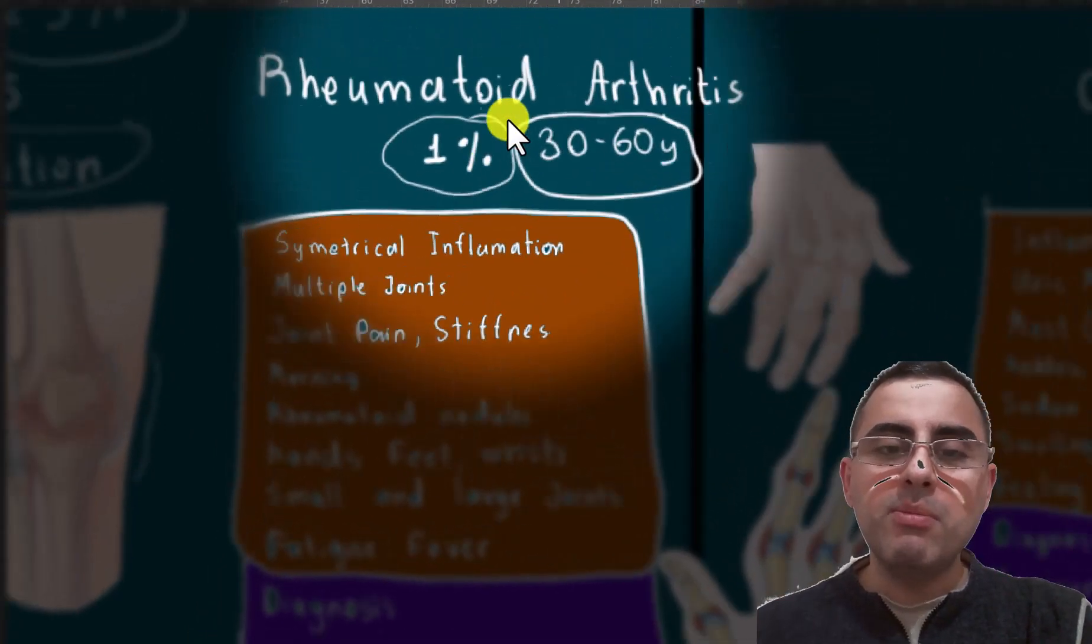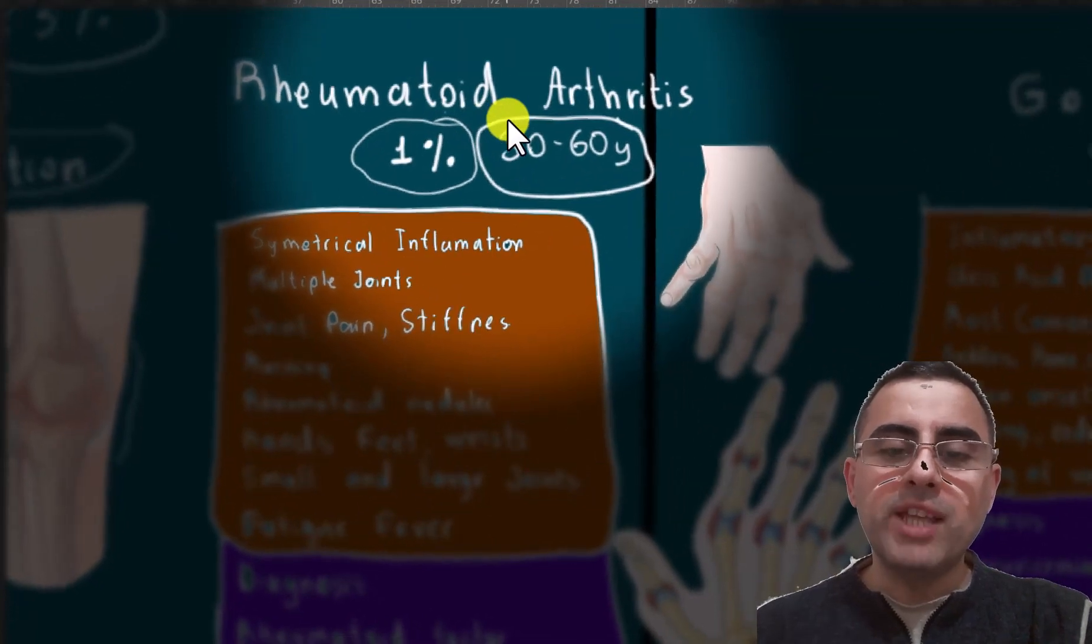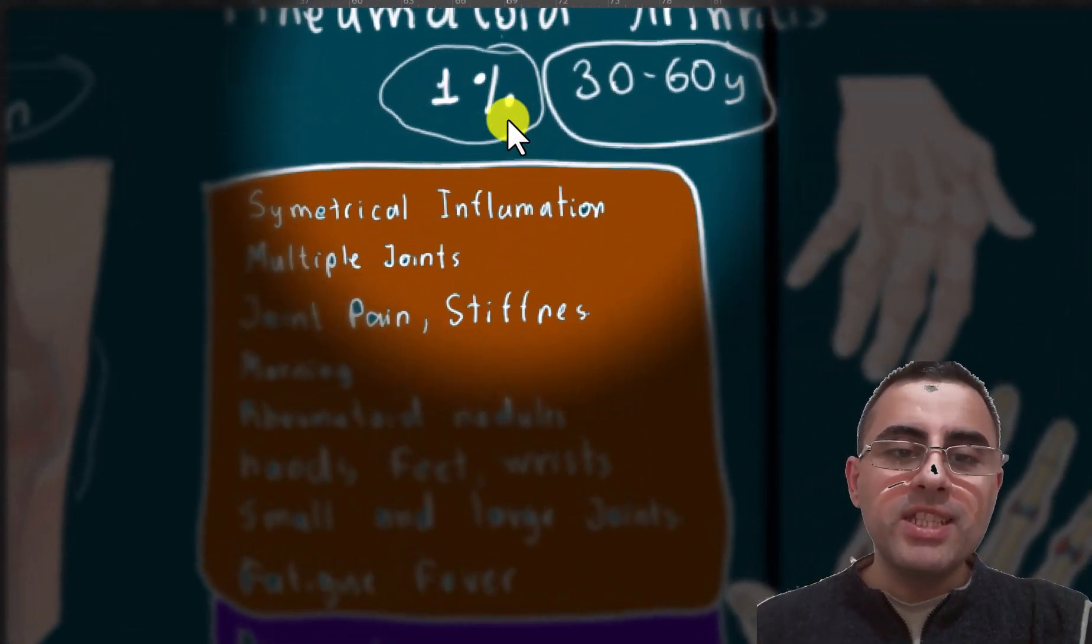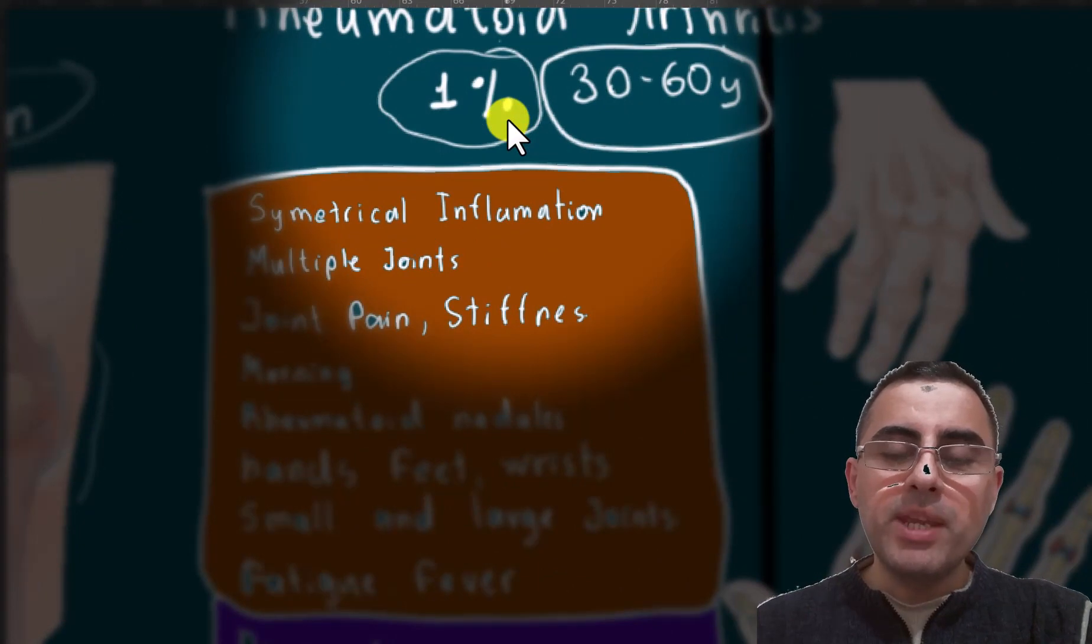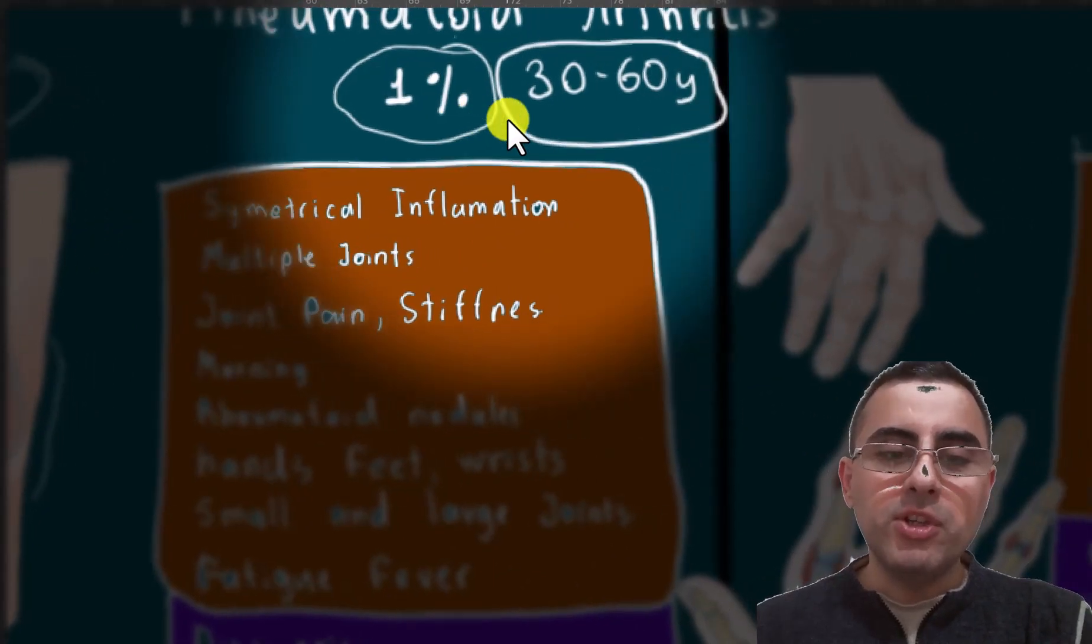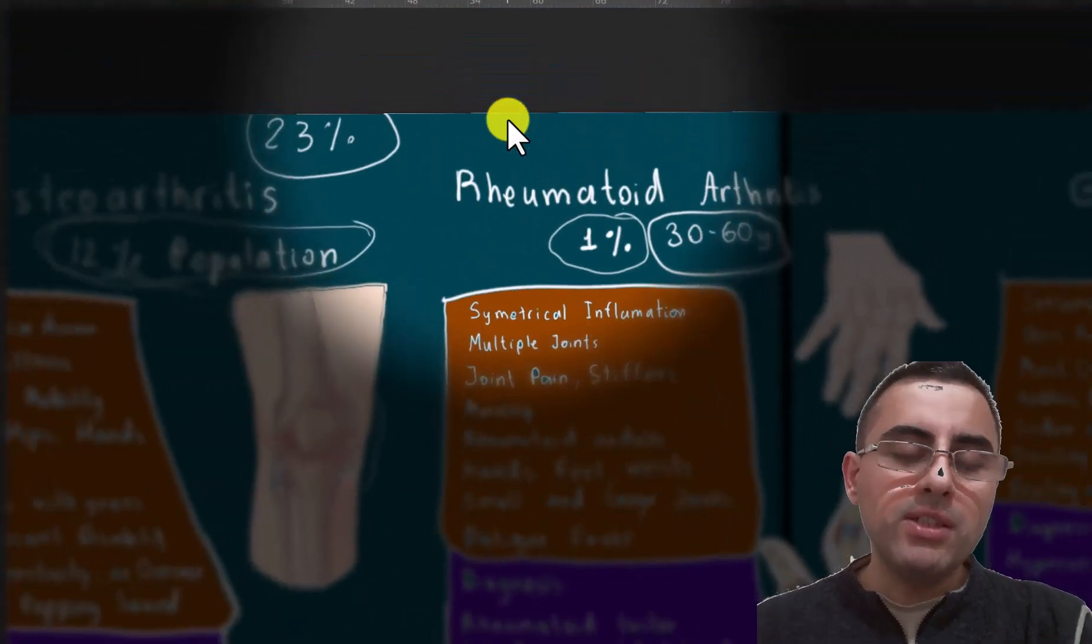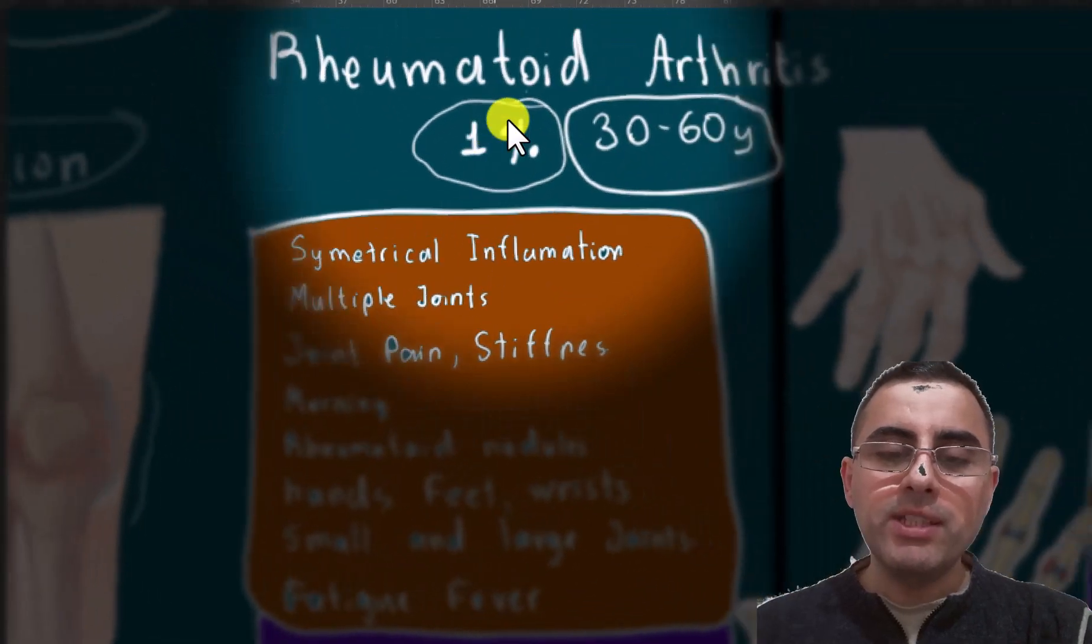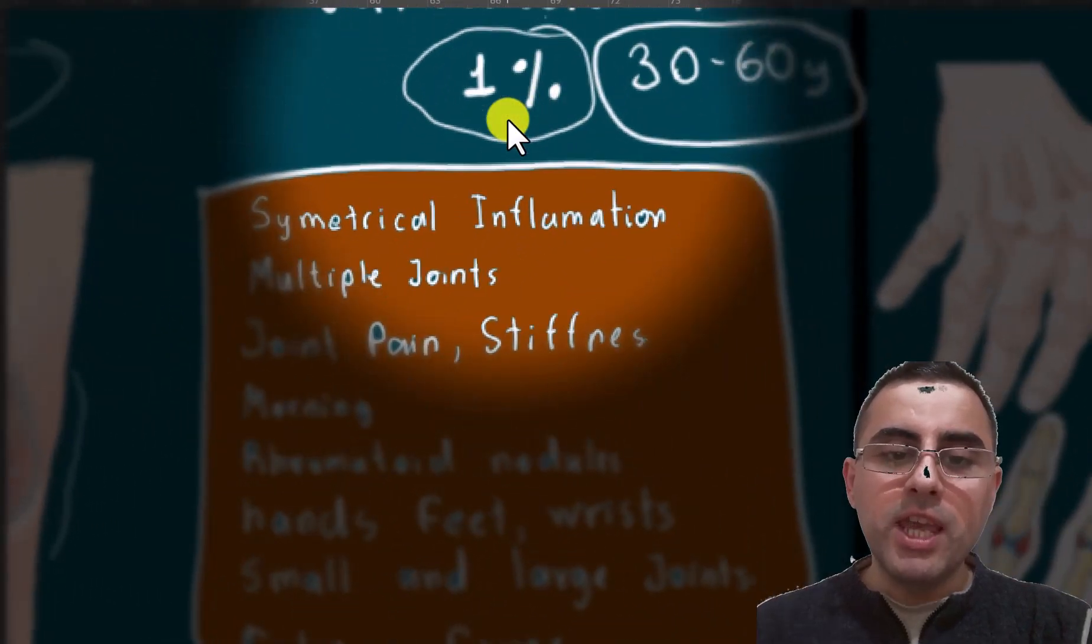Rheumatoid arthritis affects around 1% of the population and is more commonly diagnosed between age 30 to 60. Rheumatoid arthritis causes symmetrical inflammation of joints and affects multiple joints. So if osteoarthritis affects one joint or several joints, rheumatoid arthritis affects multiple joints.